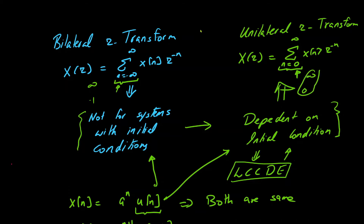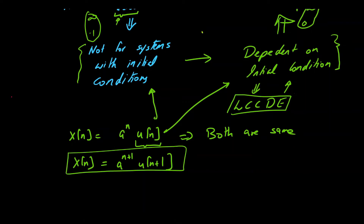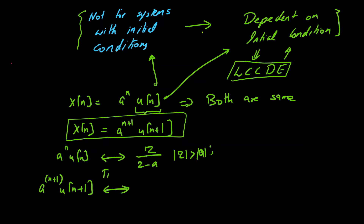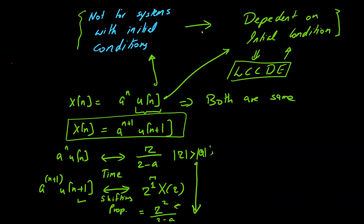For a^n u[n], the bilateral and unilateral z-transforms are both z/(z-a), with |z| > |a|. Now if we shift in time — that is, we have a^(n+1) u[n+1] — we can use the time shifting property. For the bilateral case we would have X(z) times z raised to the amount of shift, giving z²/(z-a), and it is unchanged.